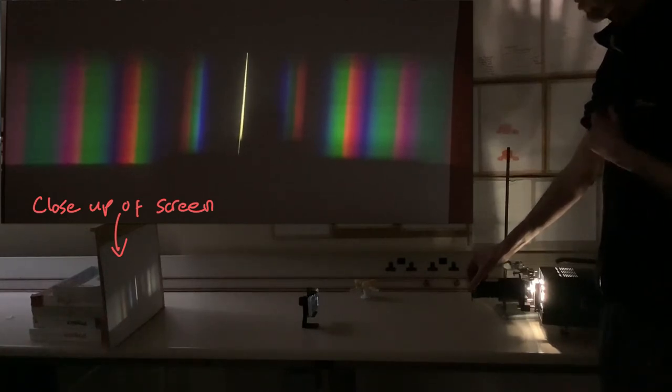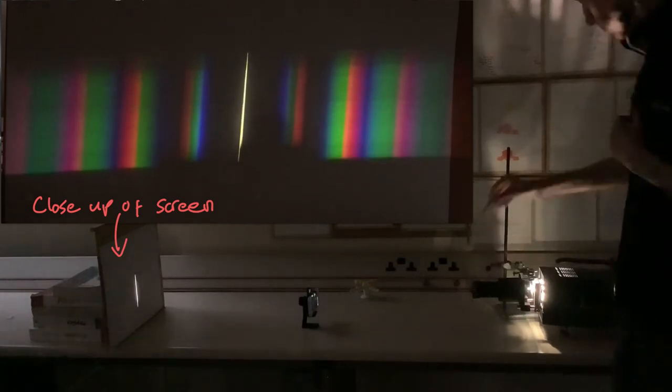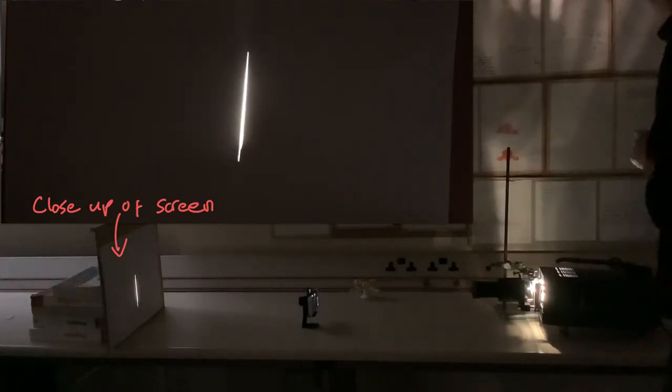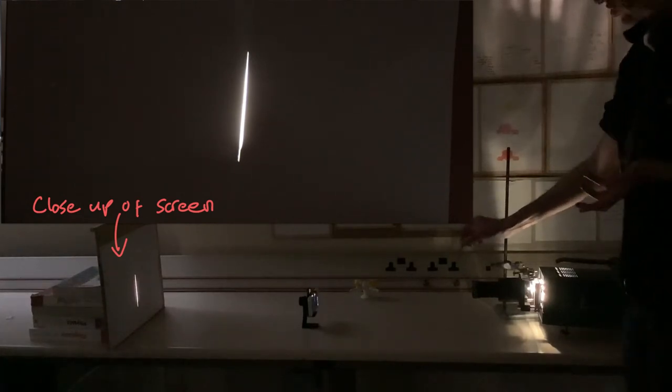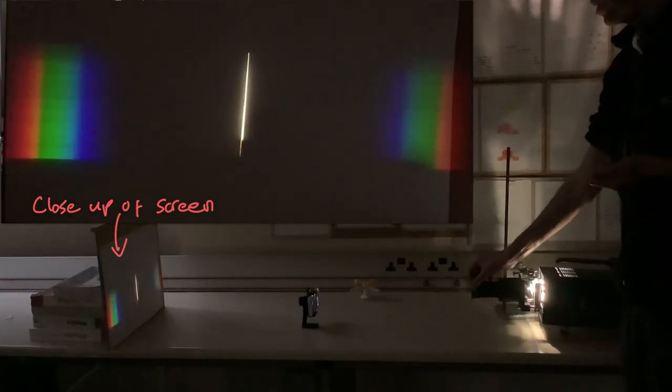Let's contrast that to what we see if we use a 300 lines per millimeter diffraction grating. What do you think is going to happen? We're still seeing spectra but they're much more spread out.